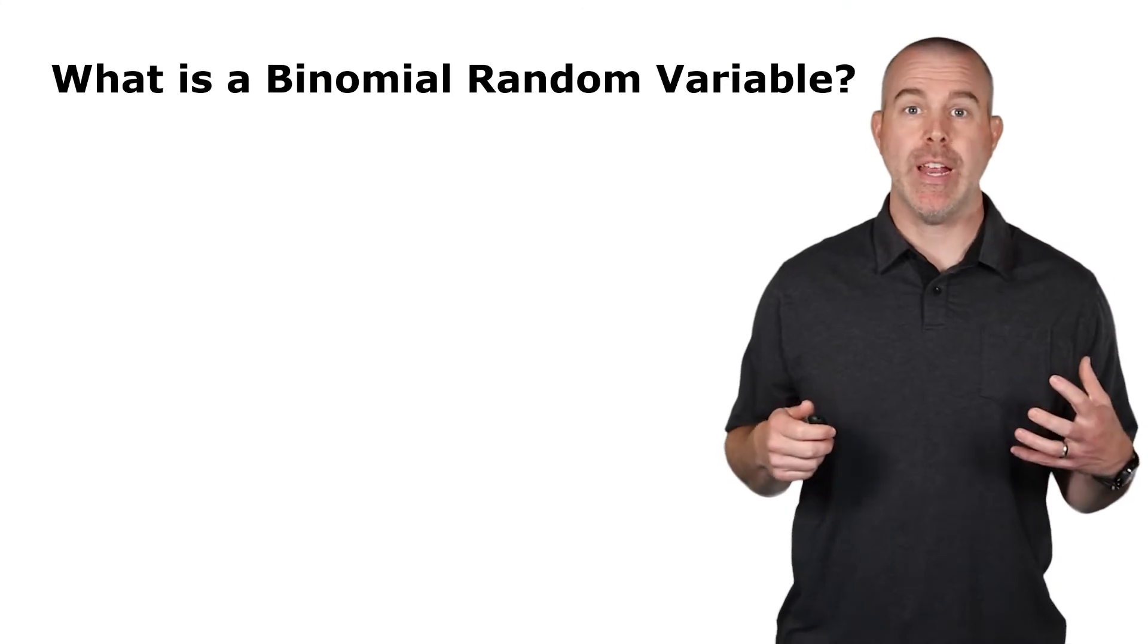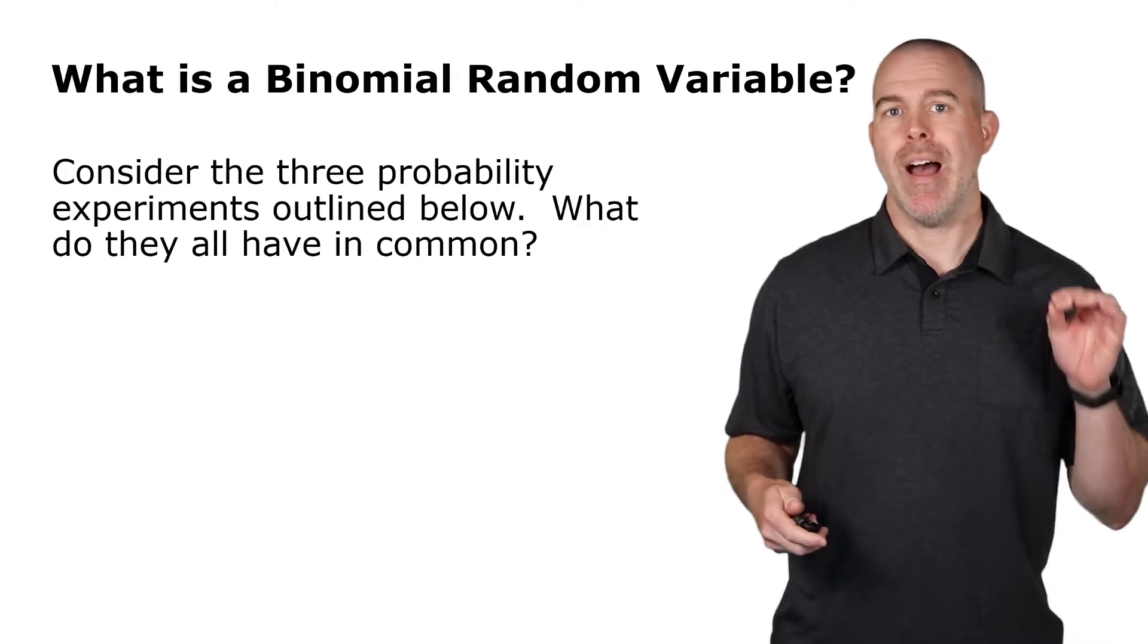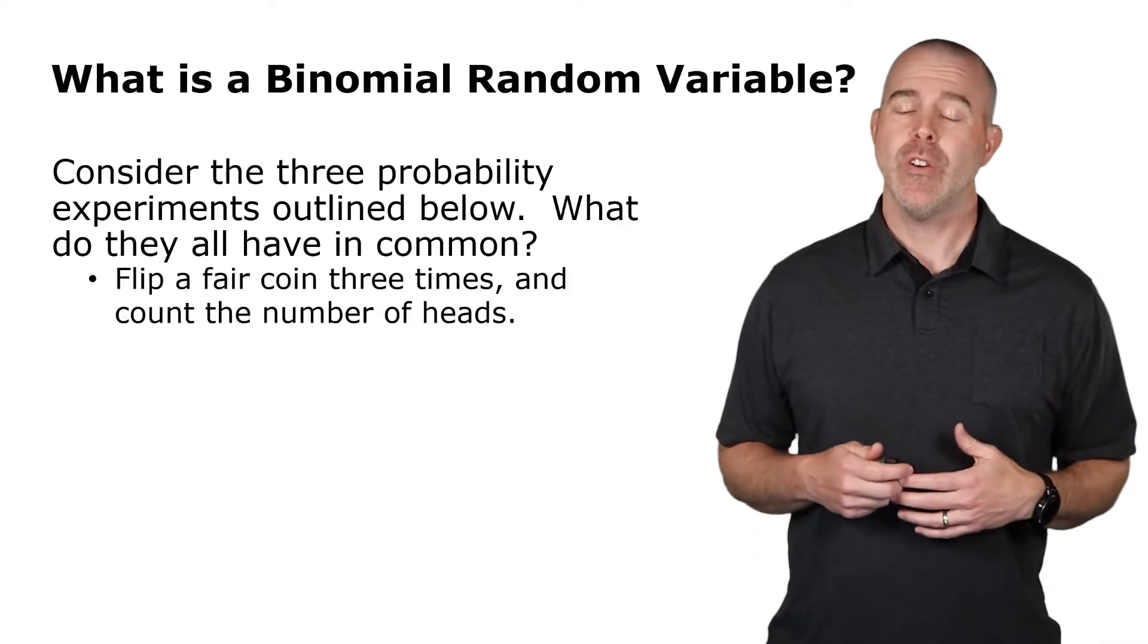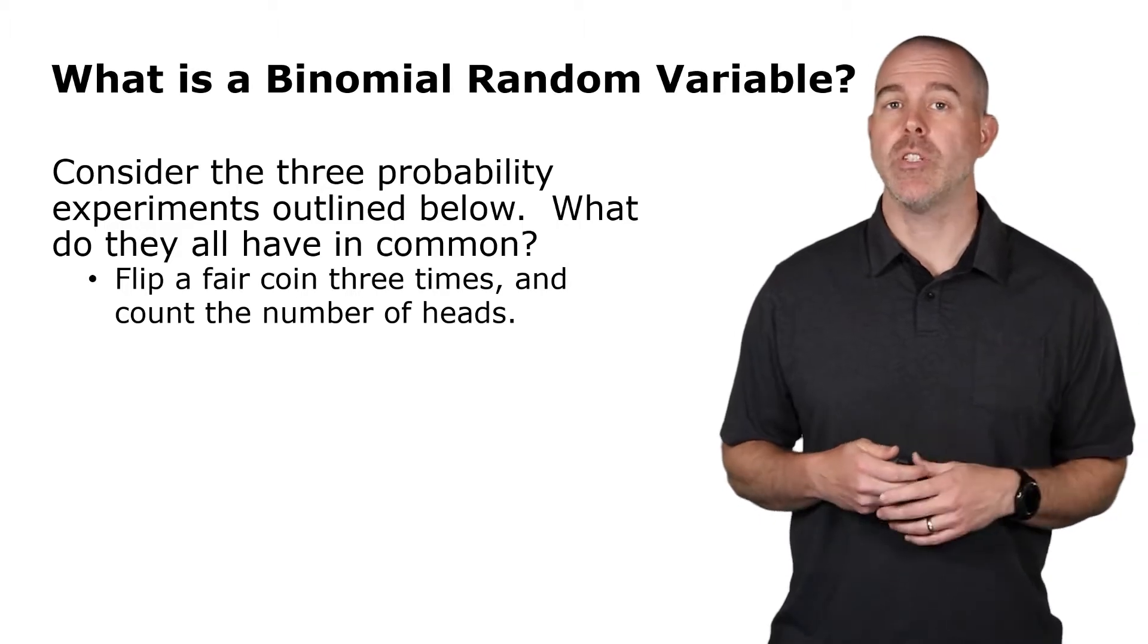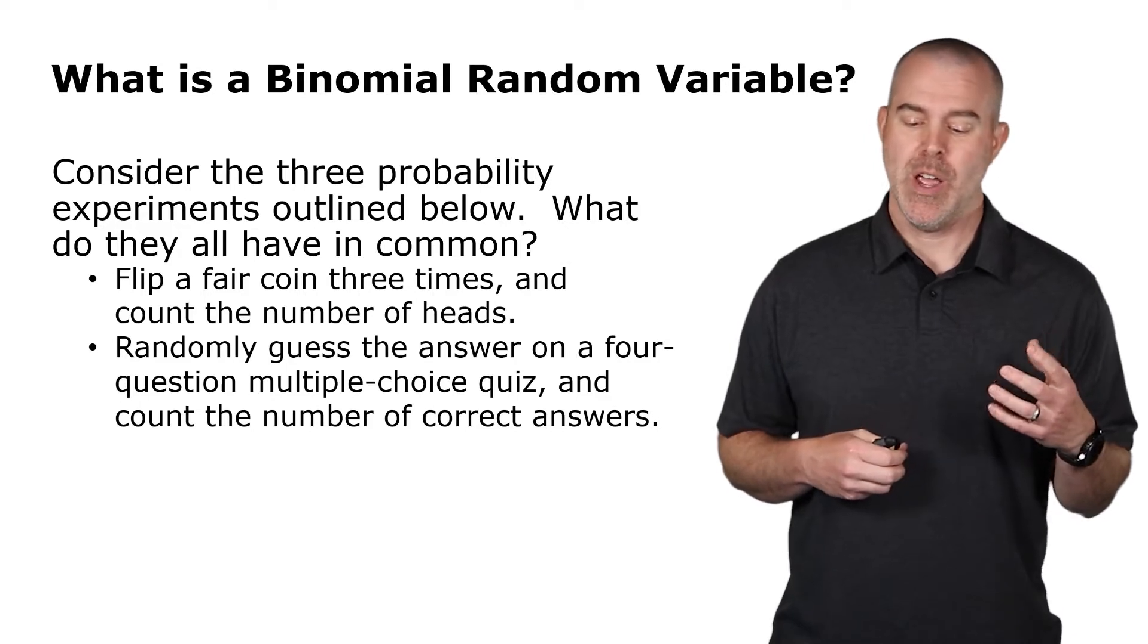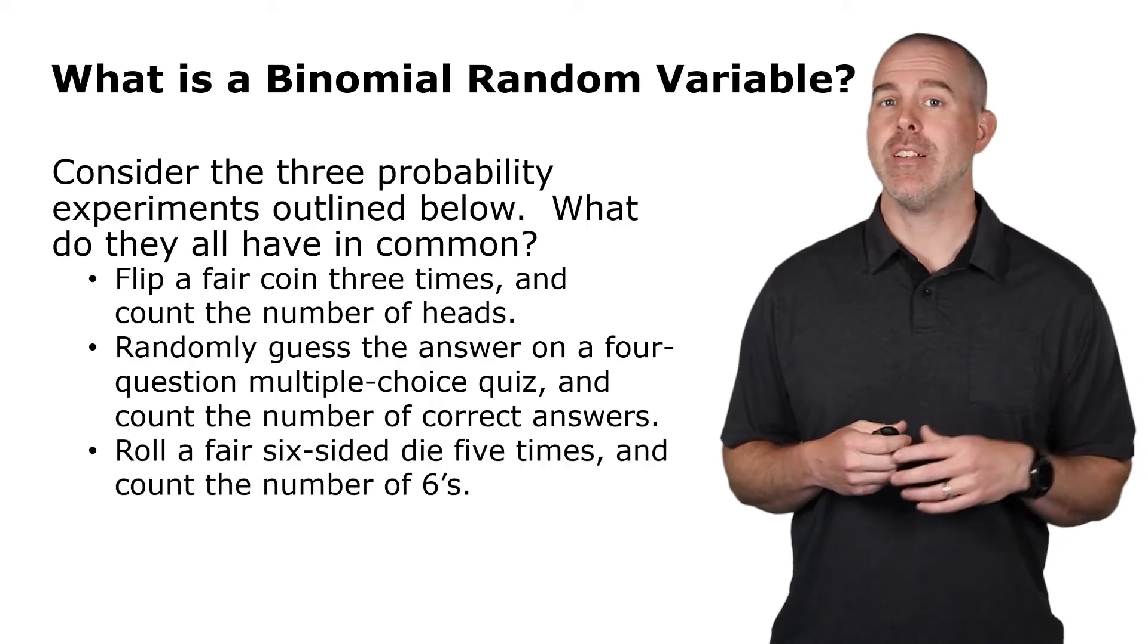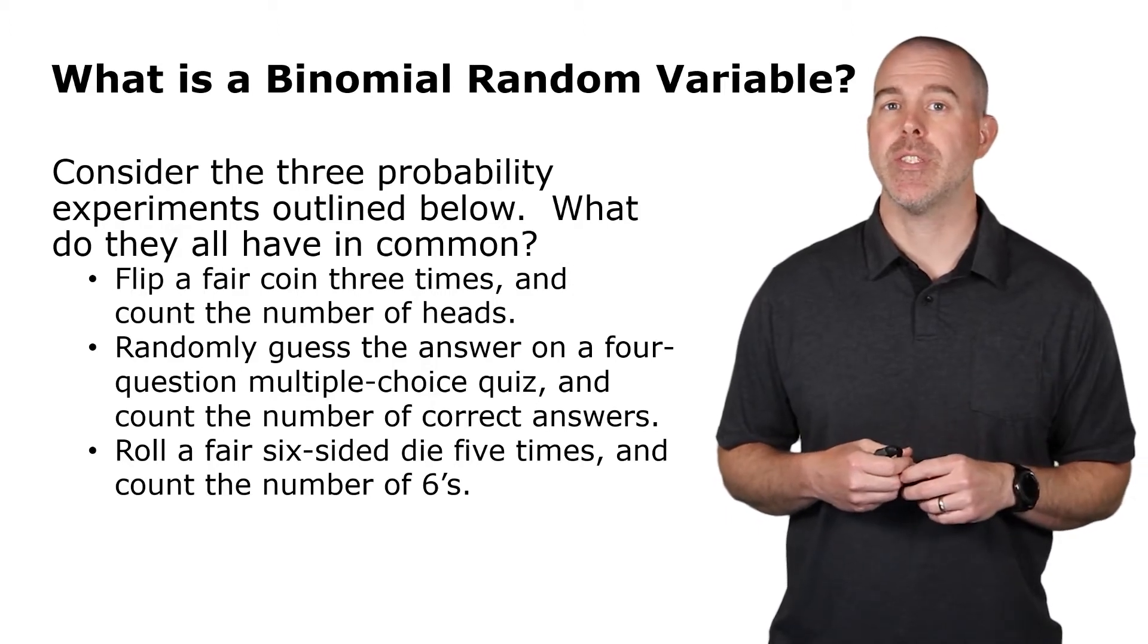We're going to start trying to get a good idea about what exactly a binomial random variable is. I'm going to introduce this with three specific examples. I want you to look for some trends that these three examples have in common. First, what if we flip a coin three times and then count the number of heads? What about a multiple choice test, a quiz, where we have four questions and we randomly choose the answers and then count the number of correct answers? And then the third example is if we roll a fair six-sided die and then count the number of sixes.